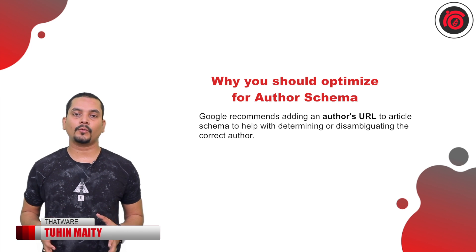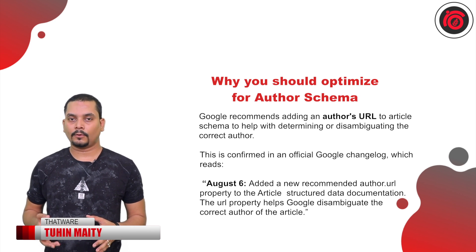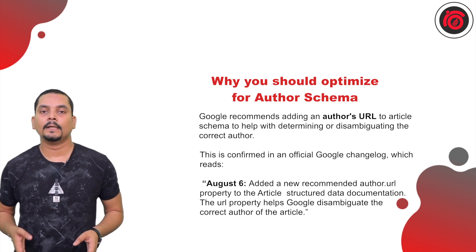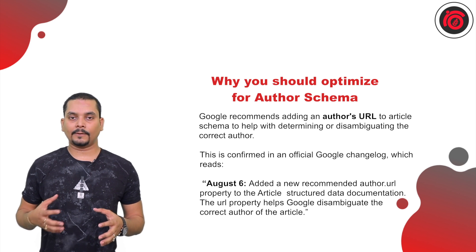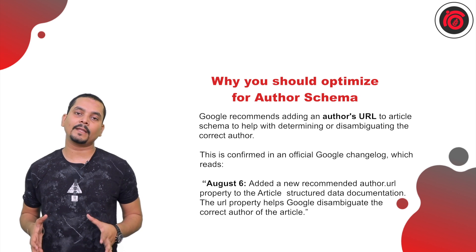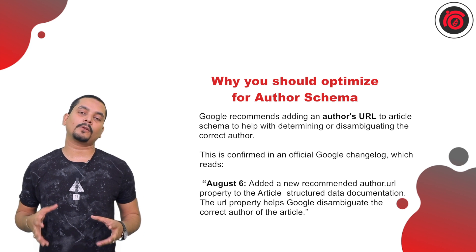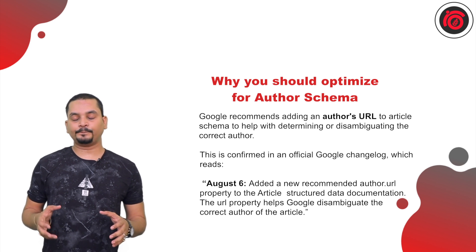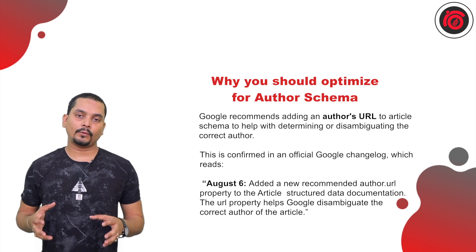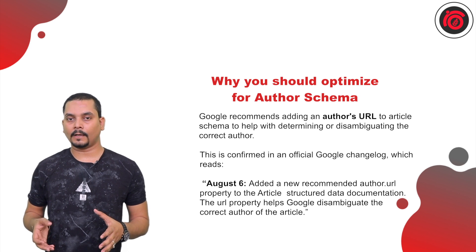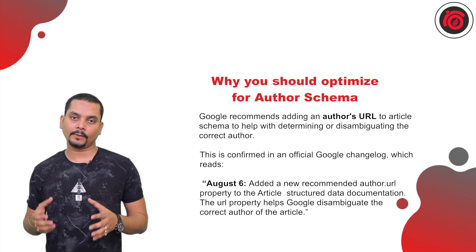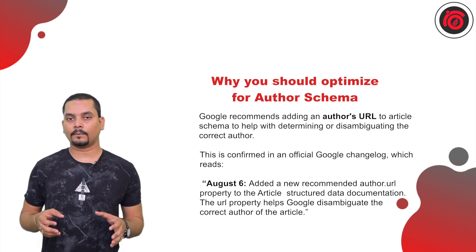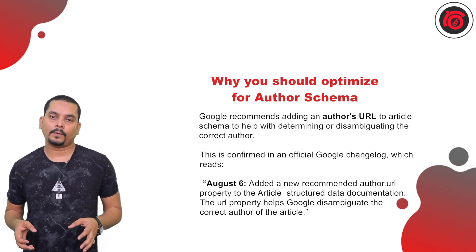Why should you optimize for author schema? Author schema denotes the blog you are recently publishing on your website. Once Google crawlers crawl your latest published blog or article, in order to give it maximum priority, you should define the author schema — specifically the author name for that particular blog or article. In the author schema, you can include the author name and the blog URL that you are writing for — just two specific fields.